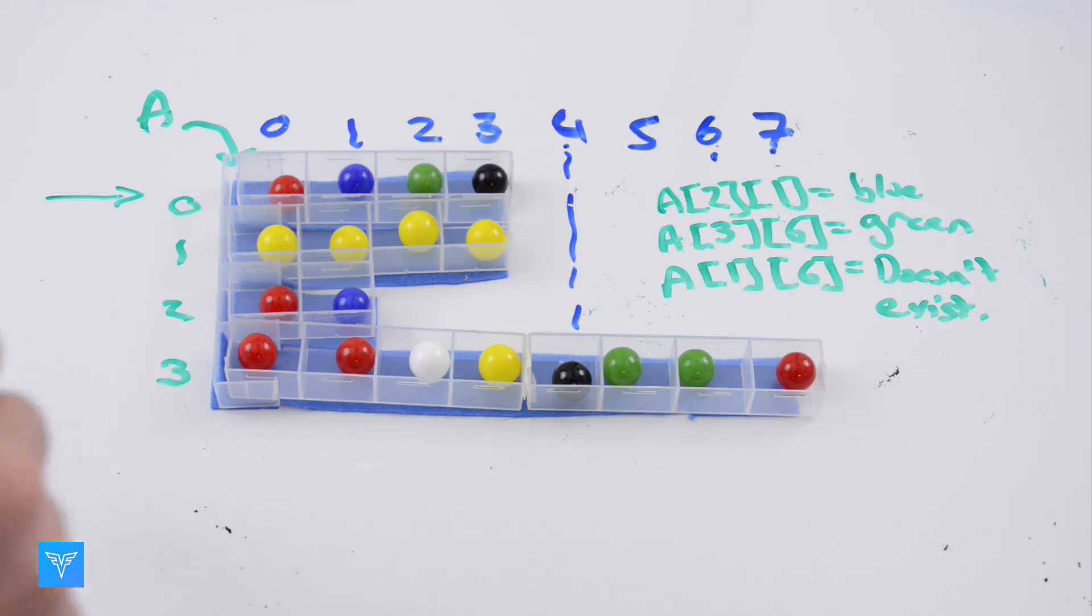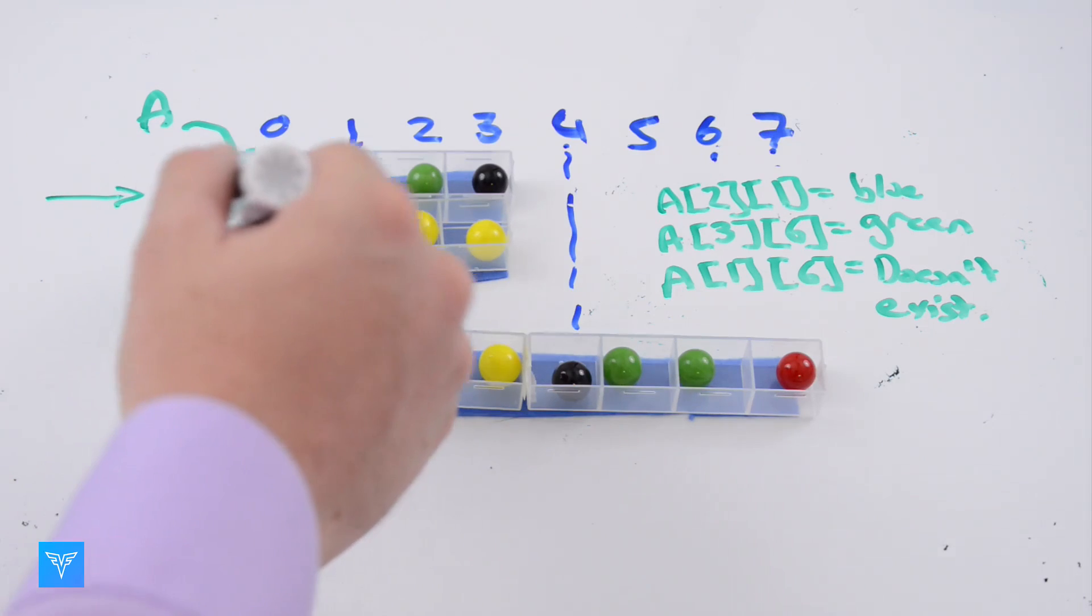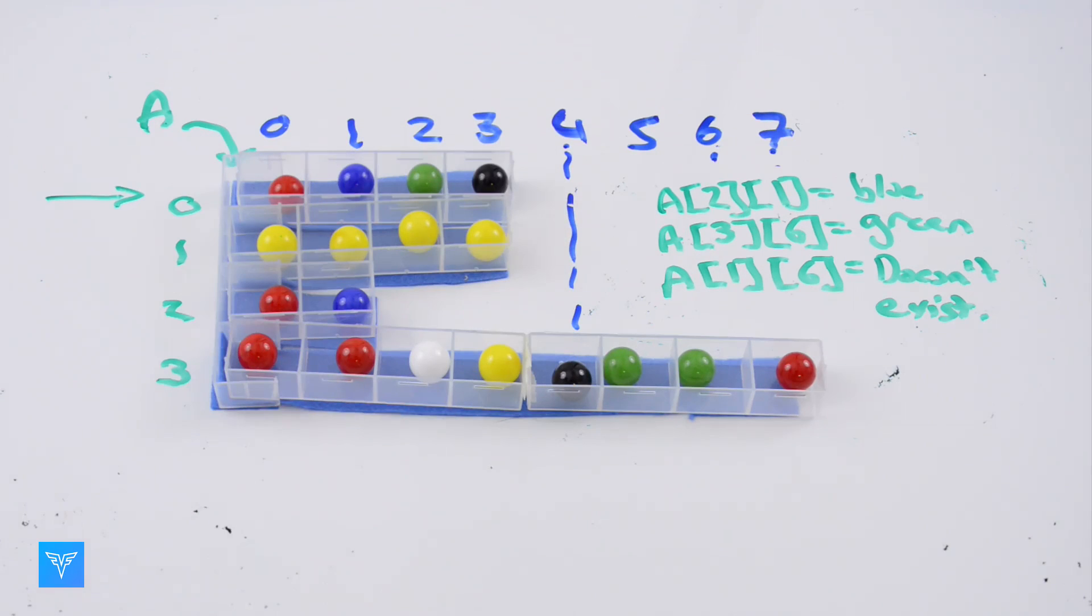We call this array two-dimensional because we need two indices to access an element. First, we have to say which row in A we are going to look at. Then we have to say which element in the array we want.